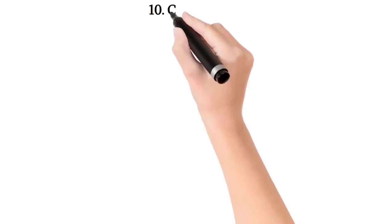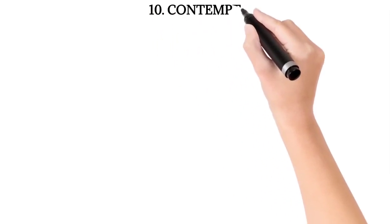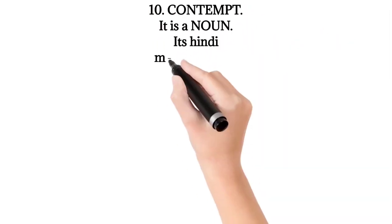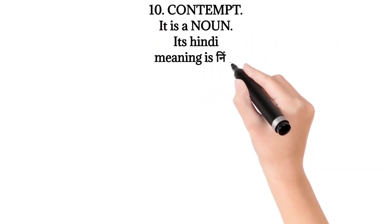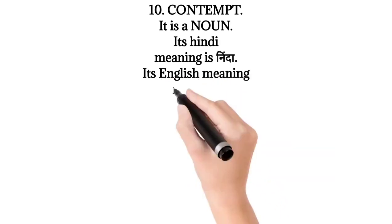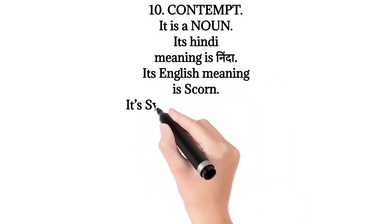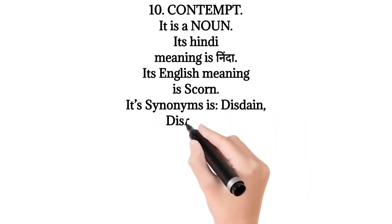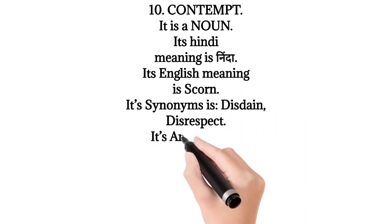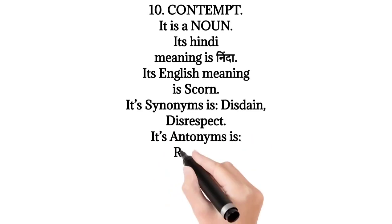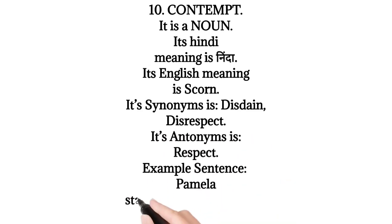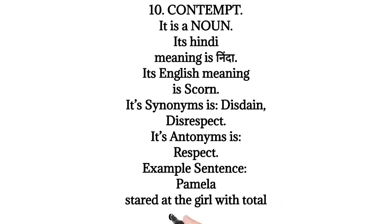10. Contempt — it is a noun. Its Hindi meaning is 'ninda'. Its English meaning is 'scorn'. Its synonyms are disdain, disrespect. Its antonym is respect. Example sentence: Pamela stared at the girl with total contempt.